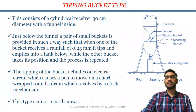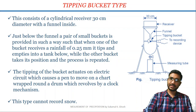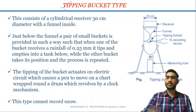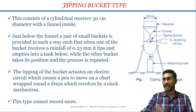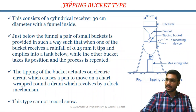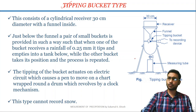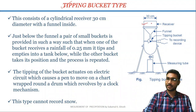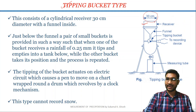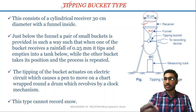The first type of recording gauge is the tipping bucket type recording gauge. This consists of a receiver with a diameter of 30 centimetres, a receiving funnel, and two tipping buckets, as well as a measuring glass or measuring tube. Just below the receiving funnel, a pair of small buckets are provided, and these buckets are known as tipping buckets.